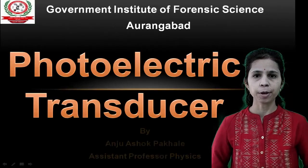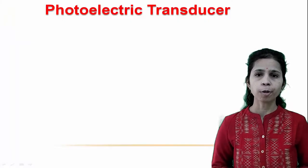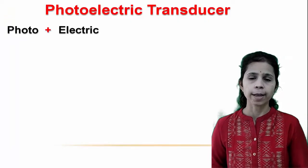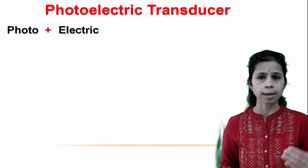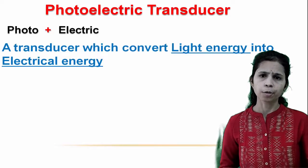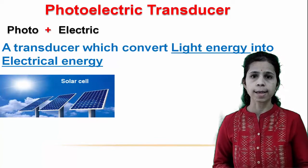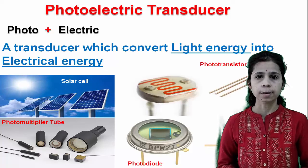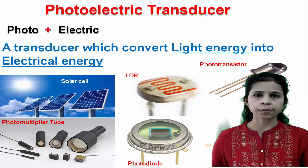In this video we are going to discuss about photoelectric transducers. The word photoelectric is a combination of two words: photo plus electric, meaning electricity which is produced due to light. A photoelectric transducer converts light energy into electrical energy. Various types of photoelectric transducers include solar cells, photomultiplier tubes, photodiodes, phototransistors, and photoconductive cells.